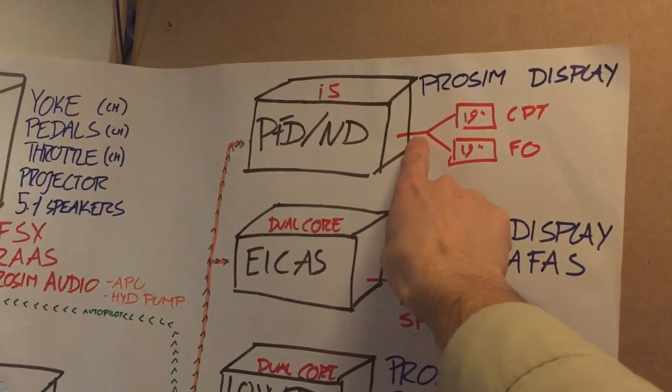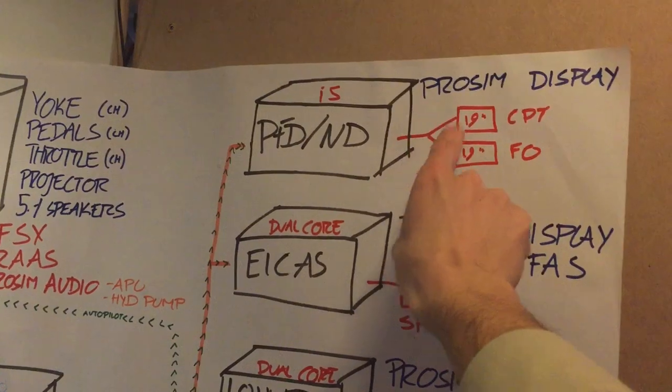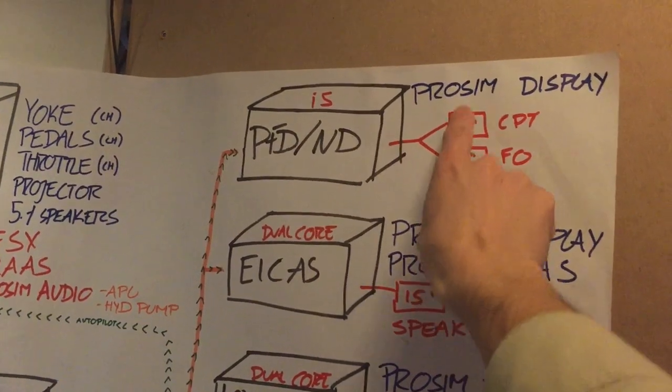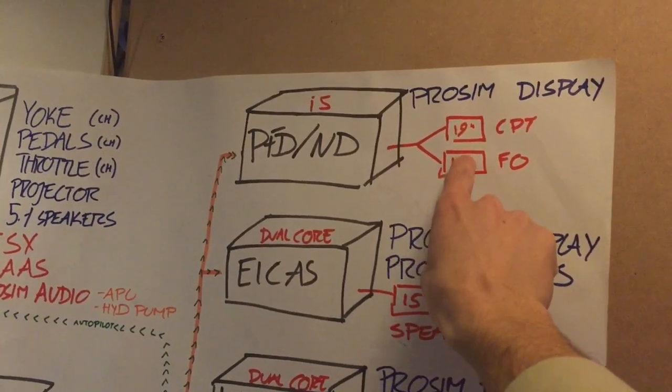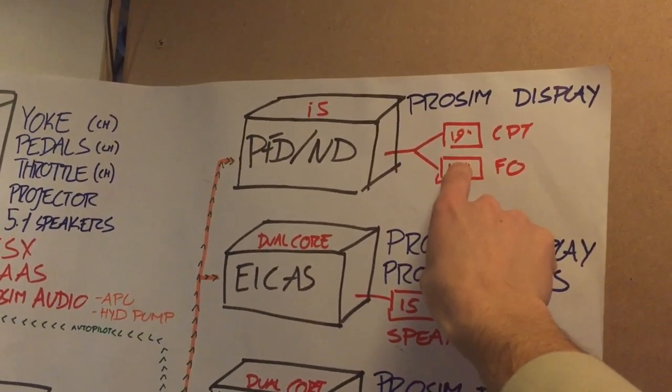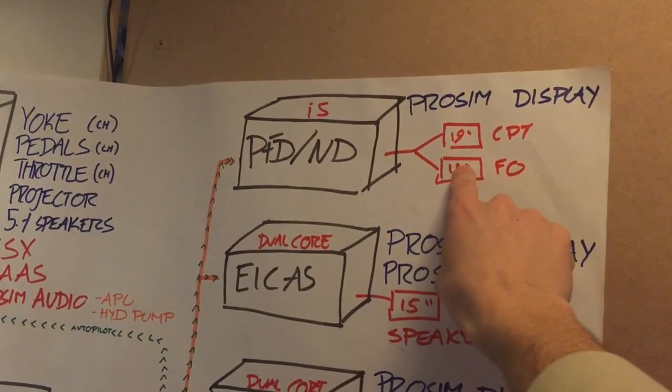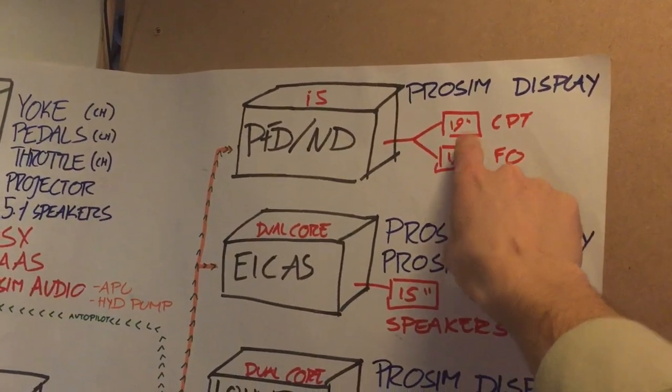ProSim display is connected to the two screens for the captain and first officer. This is a Y splitter, so it's the same signal on both — it's not two independent screens; it's the same image on both sides of the cockpit.